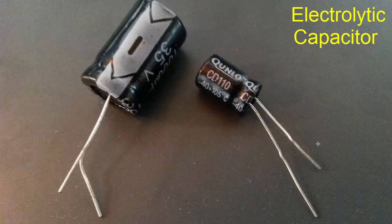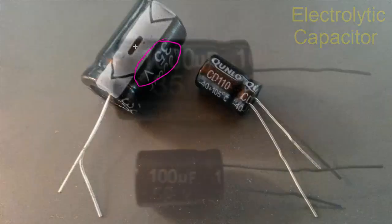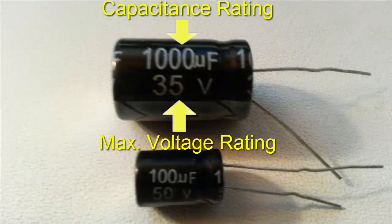It's also important to remember that all capacitors have a voltage rating. On the capacitor on the left here you can see it says 35V. That means it should be placed in a circuit of a maximum of 35 volts — you should not put it in a circuit with more than 35 volts. So keep an eye on the voltage maximum.